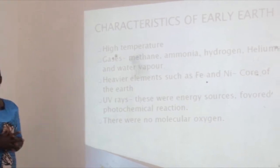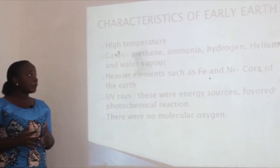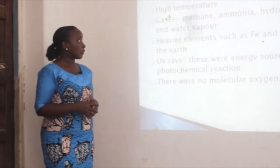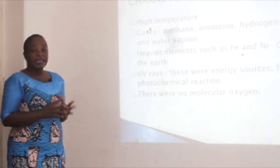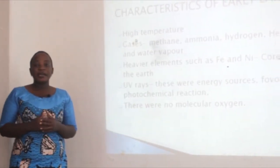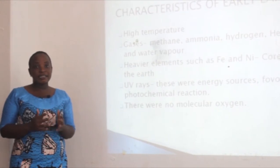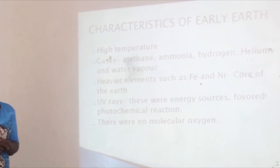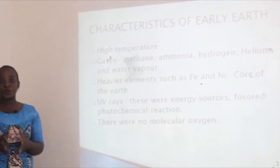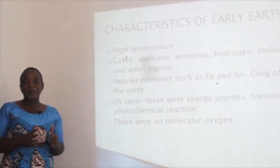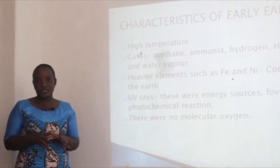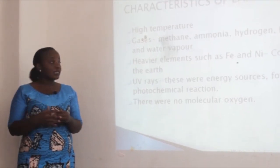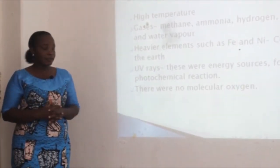At the time of the origin of life, the earth had very high temperature. There were light elements and gases — for example, methane, ammonia, hydrogen, helium, and water vapor. Because of the high temperature, all water was evaporated and was in the form of gas. Heavier elements such as iron and nickel were formed at the core of the earth.